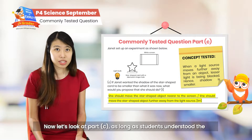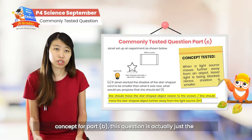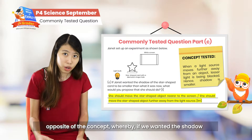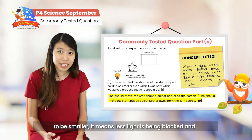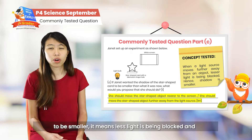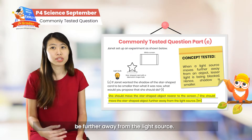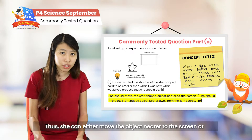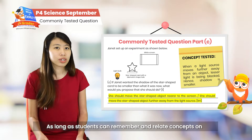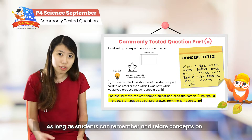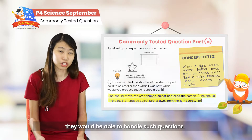For part C, as long as students understand the concept from part B, this question is just the opposite — if we want the shadow to be smaller, it means lesser light is being blocked. In order for lesser light to be blocked, the object must be further away from the light source. Thus, she can either move the object nearer to the screen or move the object away from the torch. As long as students can remember and relate concepts on light in relation to shadows, they would be able to handle such questions.